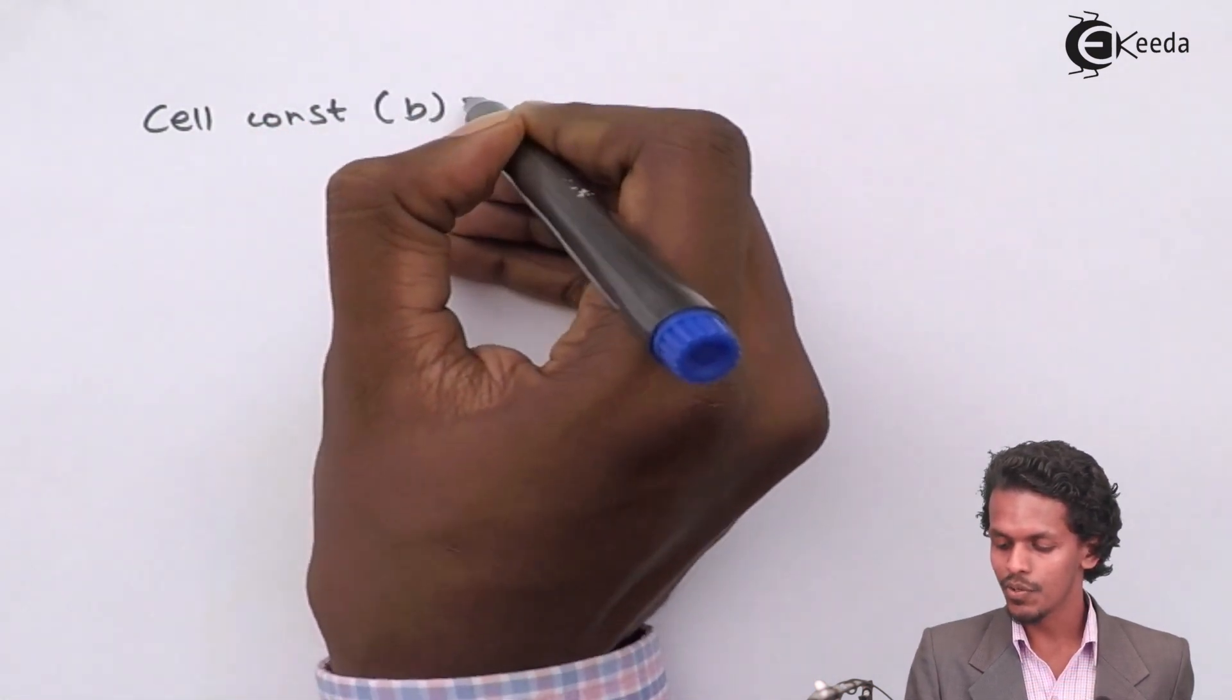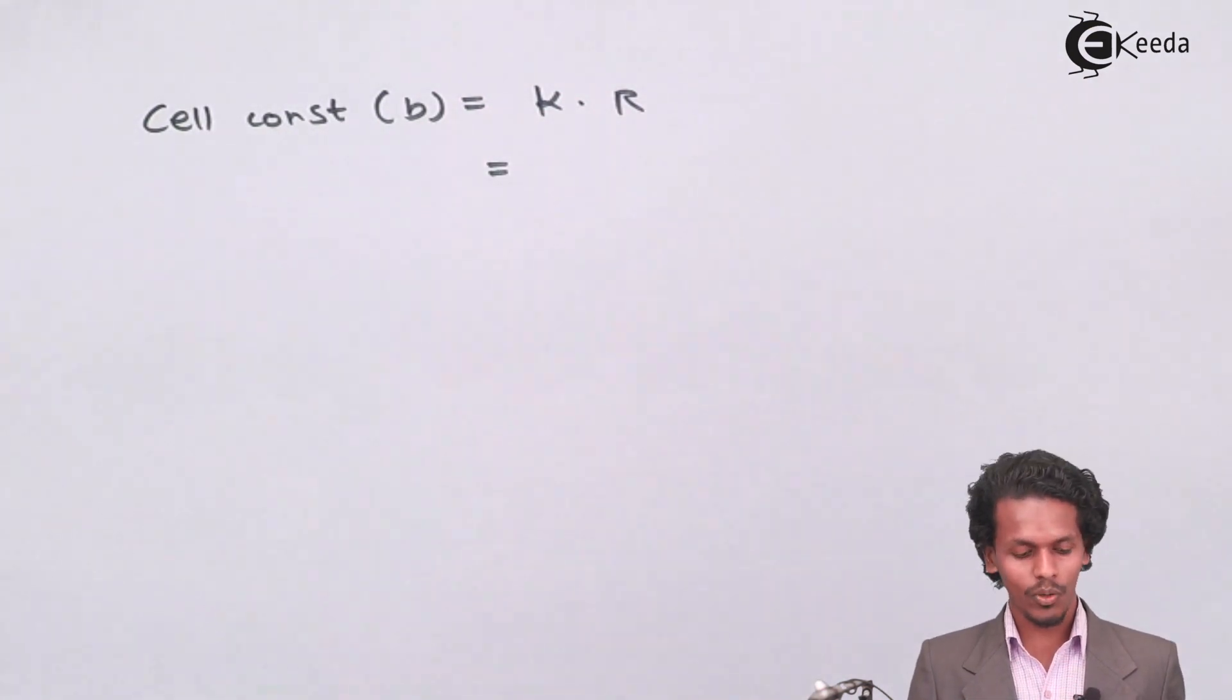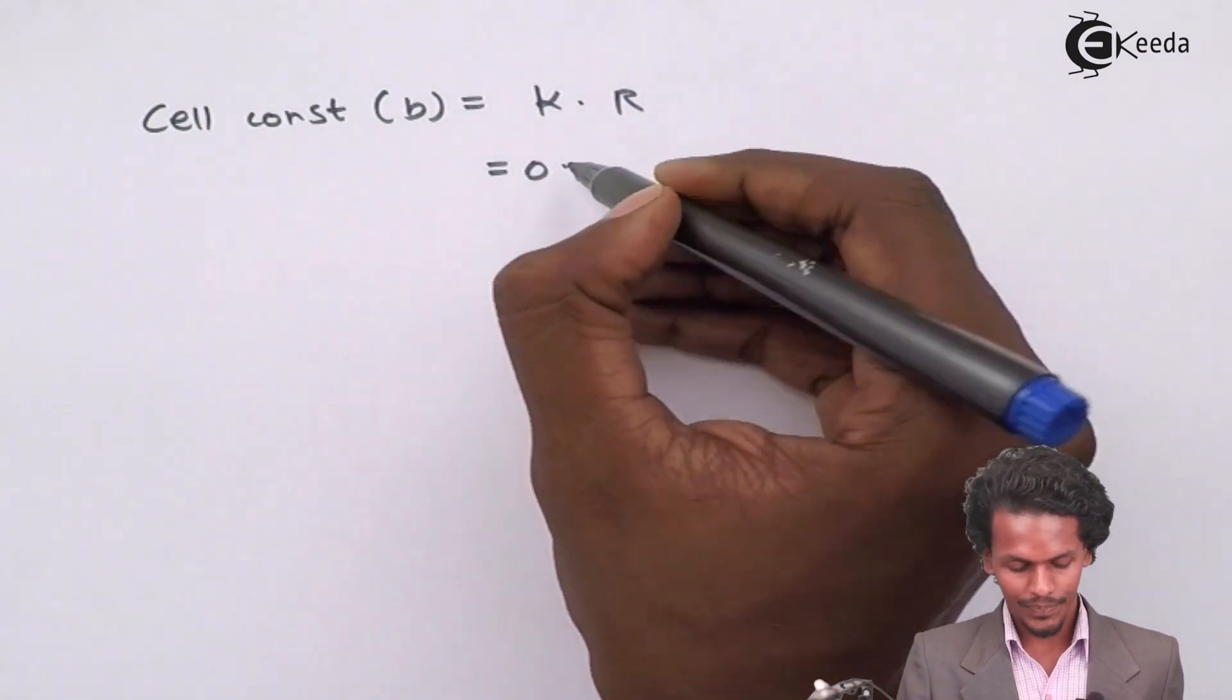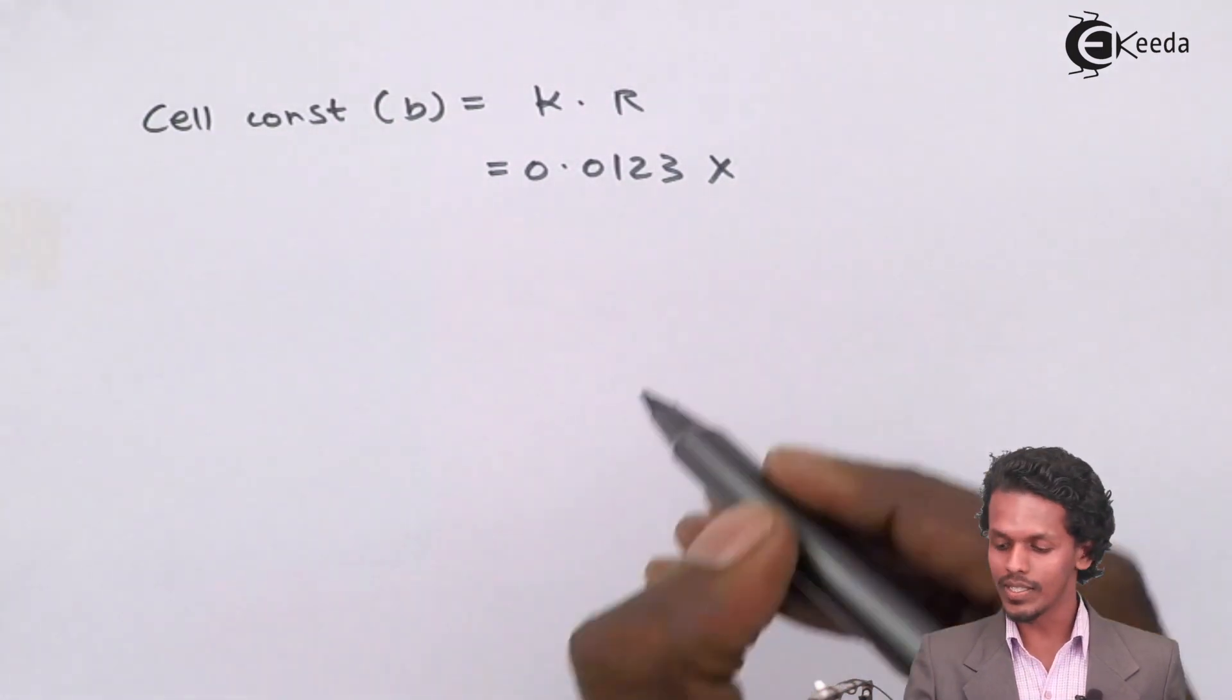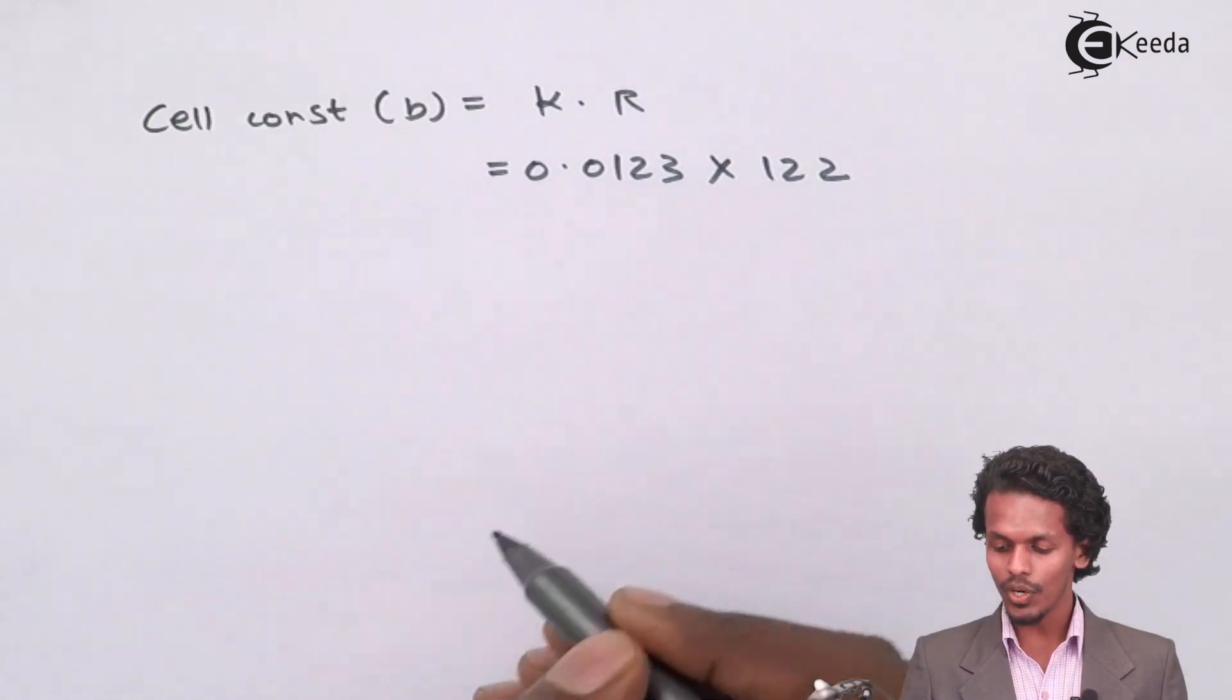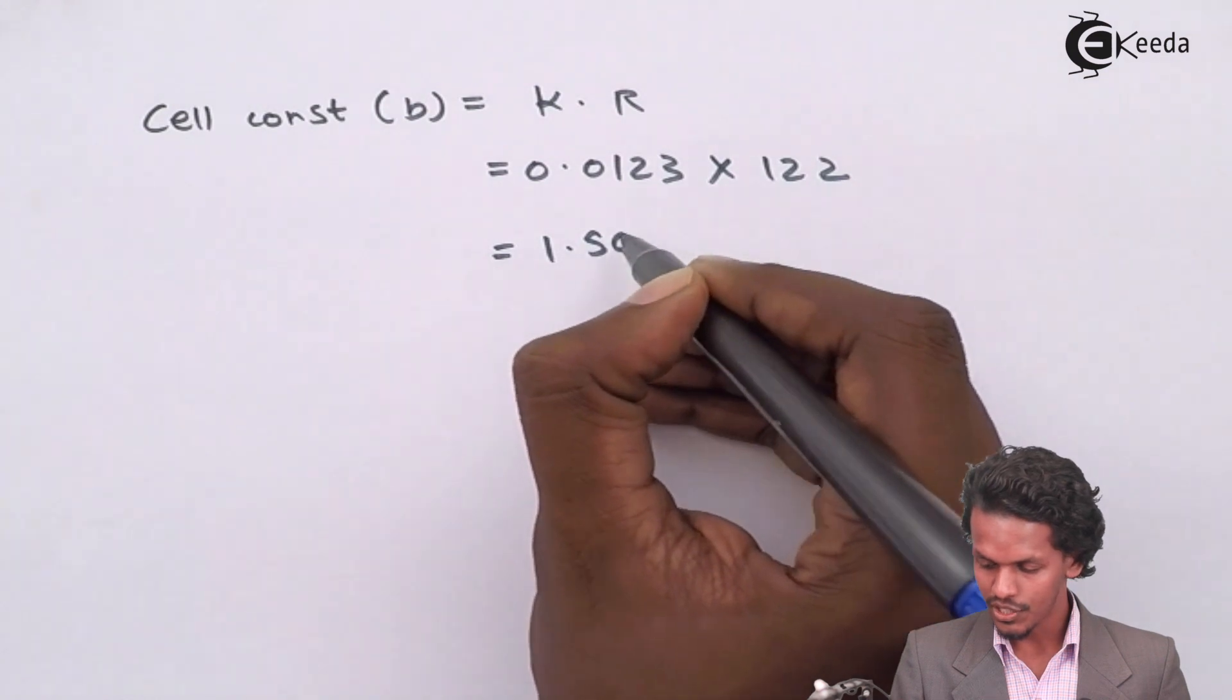In this case, the value of k that we have recently calculated is 0.0123, and the resistance provided is 122. The answer that we get is 1.50.